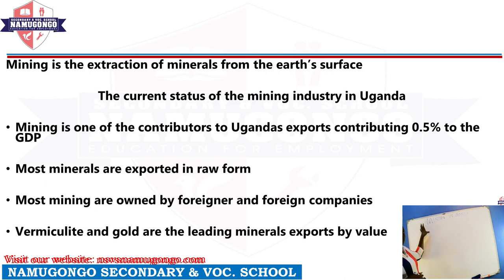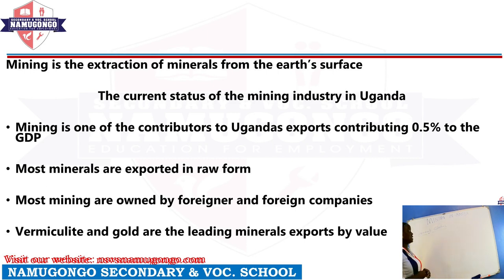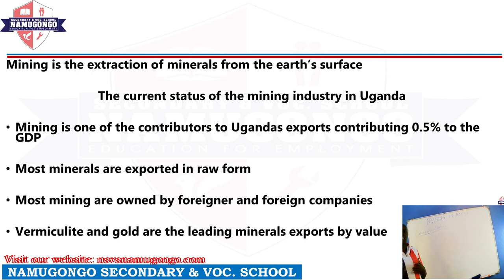In geography paper 3, you always have to show the examiner that you currently know what is taking place in the mining sector. That is why we call it the current status. You have to tell us what mining is today — currently, what can you talk about mining? That is the current status.